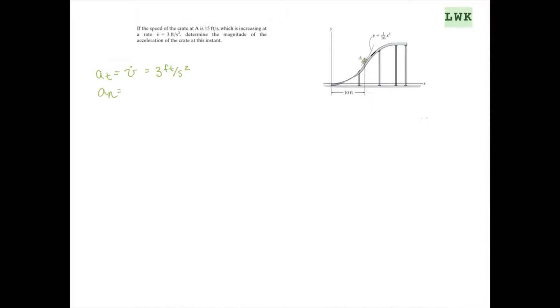So A_n, our normal acceleration, that's going to equal the magnitude of the velocity squared over rho. And we know at this point A, the speed, which is the magnitude of the velocity, is 15. So we're going to put in 15 squared over rho.